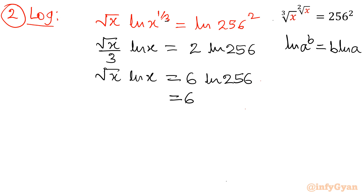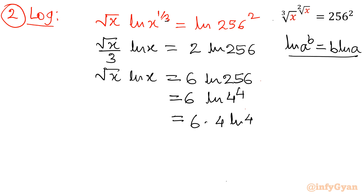Now I will write 6 times ln 256 as 6 times ln of 4 raised to 4. By the same property, it becomes 6 times 4 ln 4. I will write 6 as 2 times 3, so let me write 2 times 3 times 4 ln 4. In the next step I take two of these terms together, so it will become 8 times 3 ln 4.